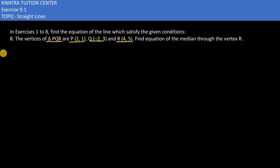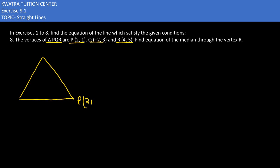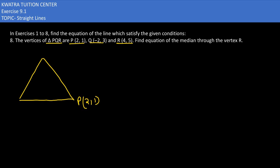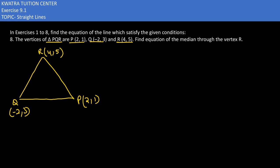Through the vertex R they're saying, and the median will become it. First of all, let's do the work of PQR. Mark it on the diagram. Let's say my P value is here at (2,1), my Q value is (-2,3), and R value is up to (4,5). Now what do we need to make through R? We need to make a median.